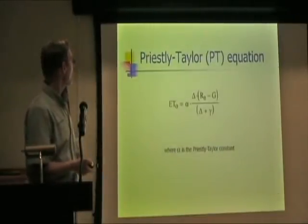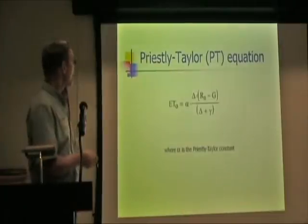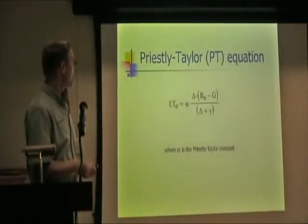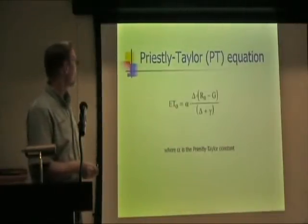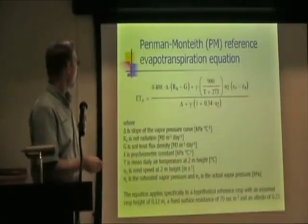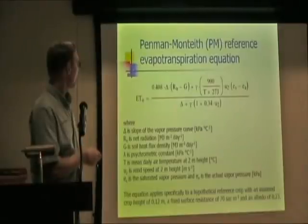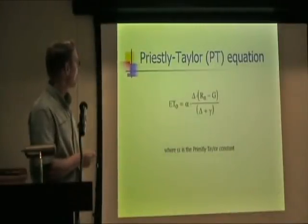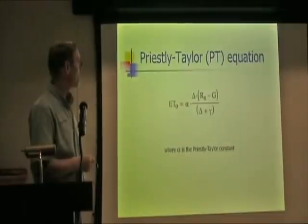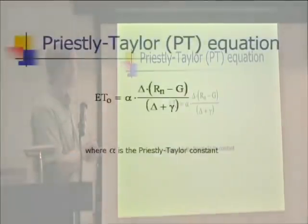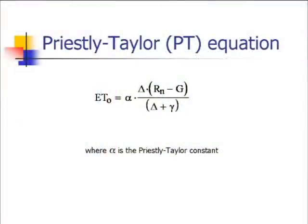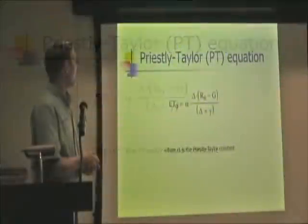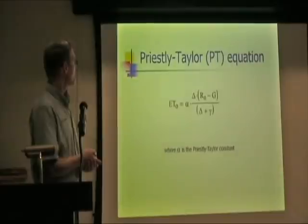The second method is the Priestley-Taylor. And if you notice it's actually a simplification of the previous equation. In this area right in here we have basically the same part of that previous equation. But it includes here something called the Priestley-Taylor constant. And it's very simple.